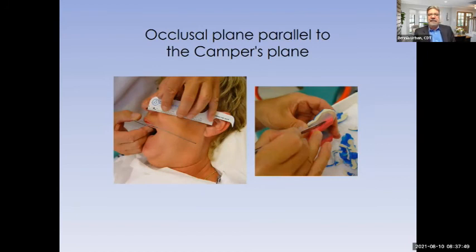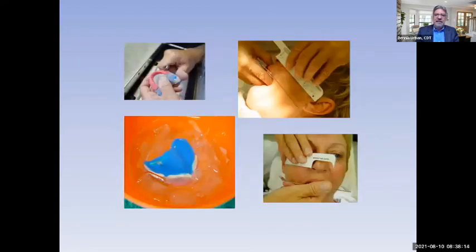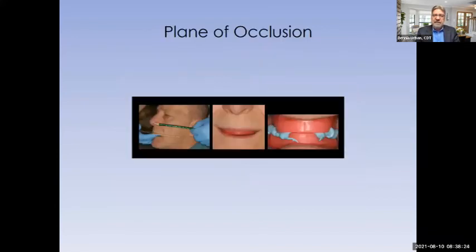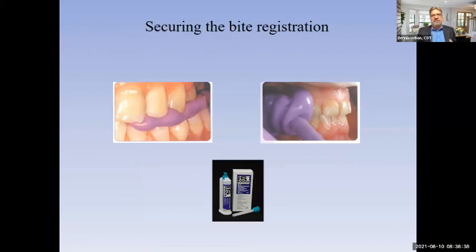The occlusal plane should be parallel to Camper's plane — from the tip of the nose to the middle of the ear. In this photo, the metal plate the doctor is using shows the occlusal plane sloping down. If left like that, we'd probably have a reverse smile situation. The doctor adjusted it by cutting away some wax, and now we have a nice, even occlusal plane — perfect guidelines for setting denture teeth correctly. Getting many bite registrations back at the laboratory with the posterior region too high — I can tell right away there's going to be a problem on the articulator.